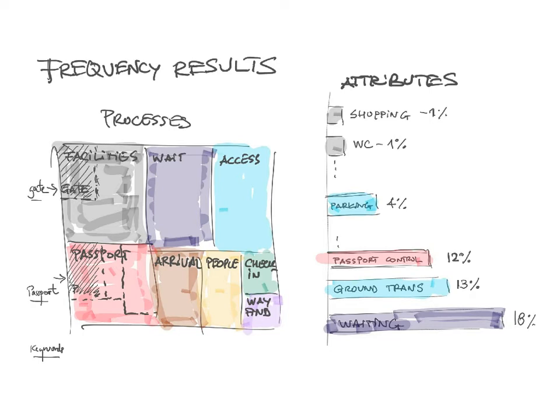One of the advantages of looking at keywords in tweets is that we can measure how many people are talking about certain topics. This tree map represents the processes — showing how many passengers are talking about facilities, passport, wayfinding, and so on. We can see that facilities comes in first position and wayfinding is last.